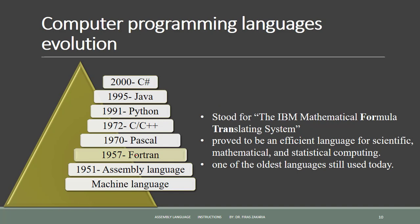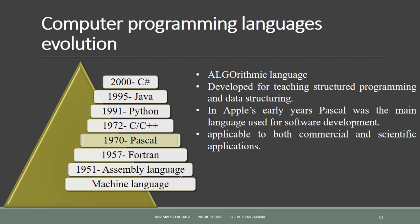Fortran language was developed in 1957. It stood for the IBM Mathematical Formula Translating System. It proved to be an efficient language for scientific, mathematical, and statistical computing, and it is still one of the oldest languages used today.